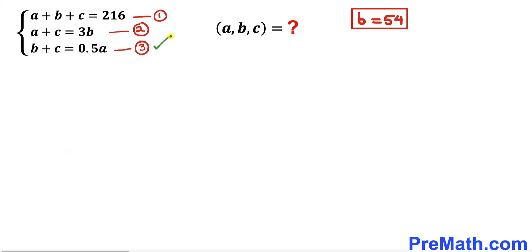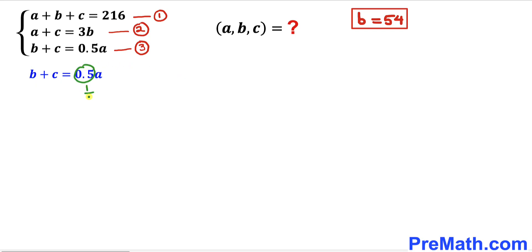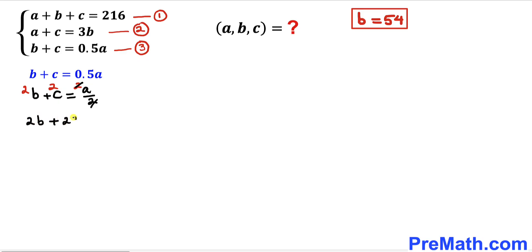Let's focus on equation three: b plus c equals 0.5 times a. Now 0.5 can be written as 1 divided by 2, so the equation becomes b plus c equals a divided by 2. I will remove the fraction by multiplying by 2 across the board — the 2s cancel — giving us 2 times b plus 2 times c equals a.